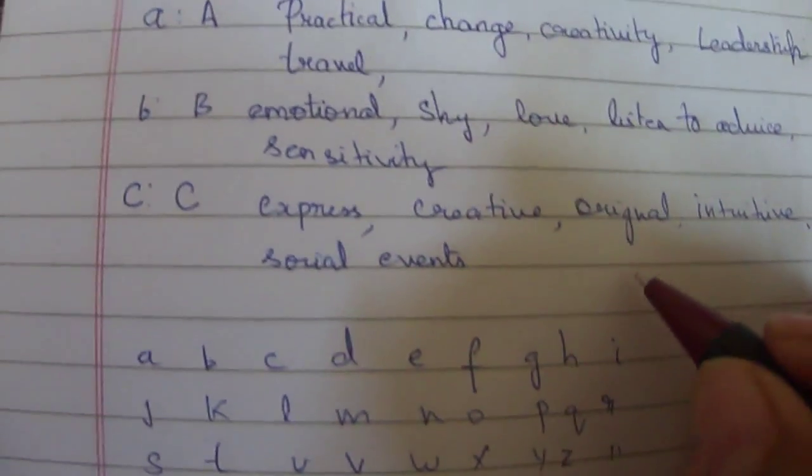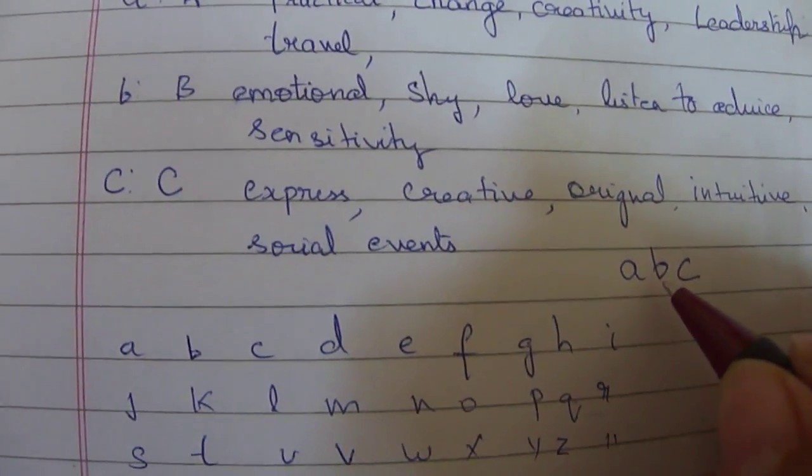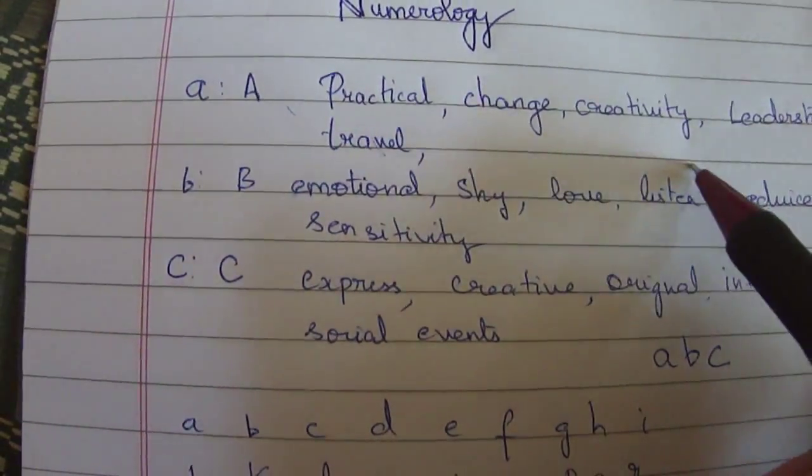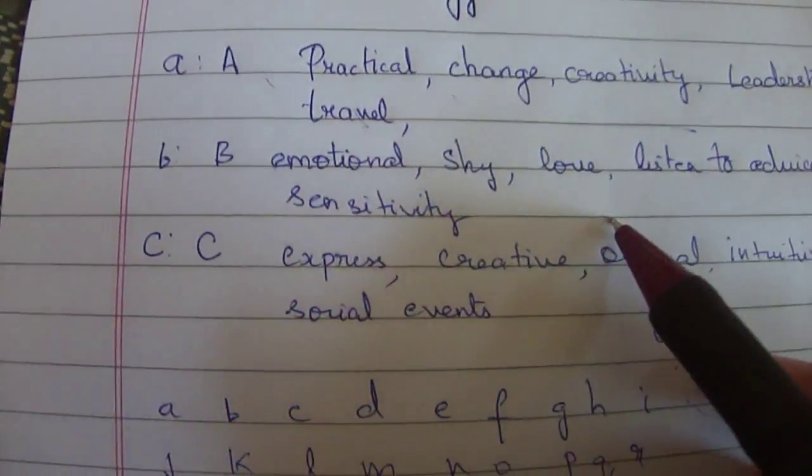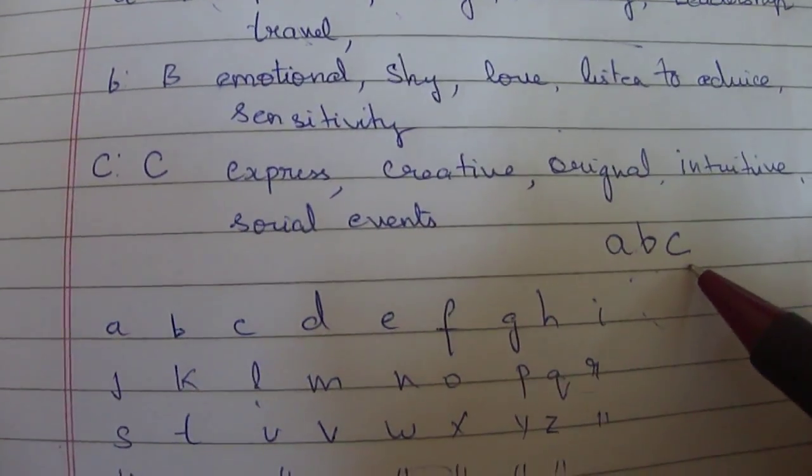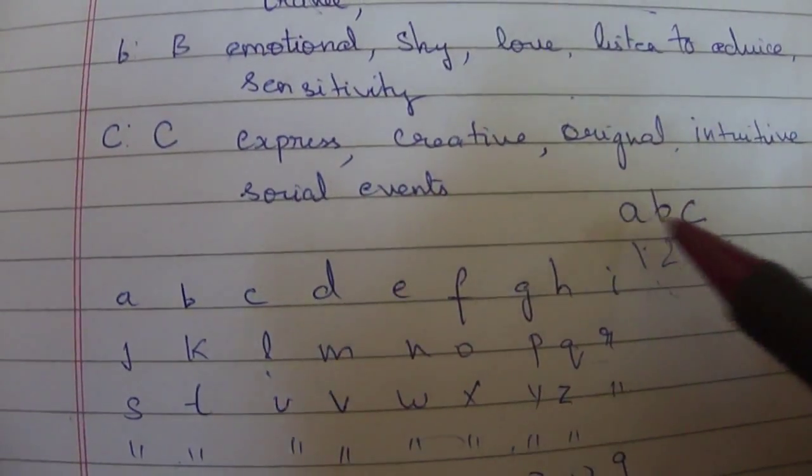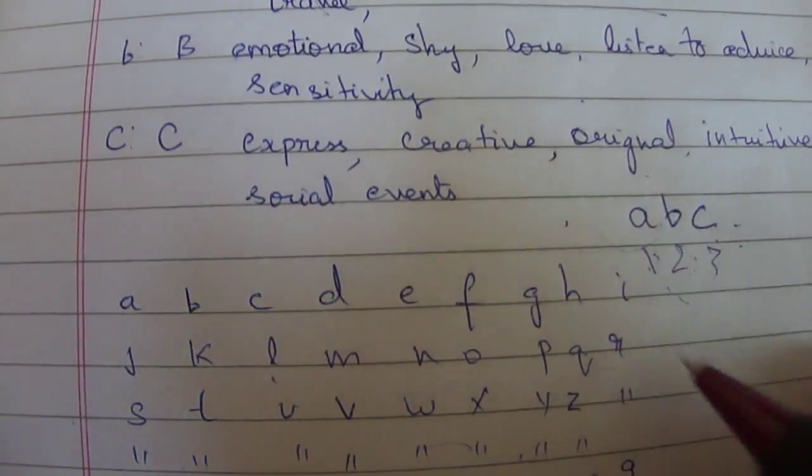So if suppose someone's name is ABC, for example, A is 1 so the qualities of A will be there in the person for the first year. Then B's quality will be there for the next 2 years, then C's quality will be there for 3 years. So for 6 years the qualities we know, again it will repeat so 7th year the quality of A will come back.